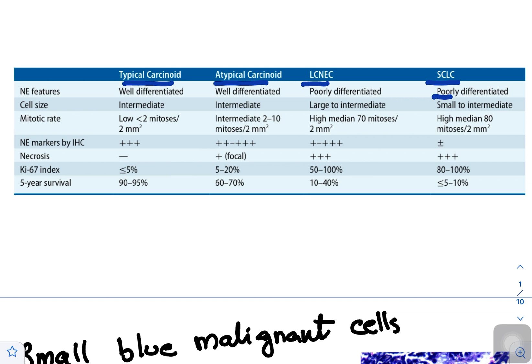Cell size is small to intermediate. Mitotic activity is high, median more than 80 mitoses compared to 70 to 10 and less than 2. The Ki-67 index is around 80 to 100 percent. Five-year survival among all is worst in small cell lung cancer.